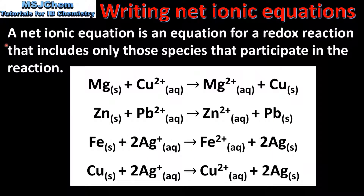A net ionic equation is an equation for a redox reaction that includes only those species that participate in the reaction. These net ionic equations only show the species that are being oxidized or reduced. For example, in the first equation, magnesium is being oxidized and copper 2+ ions are being reduced. Other ions that do not take part in the reaction are not included in the equation. These are known as spectator ions.